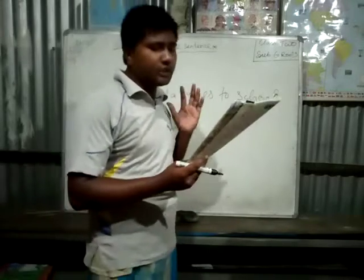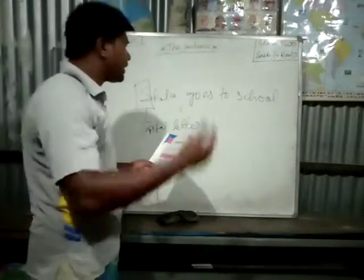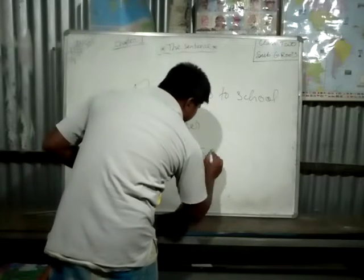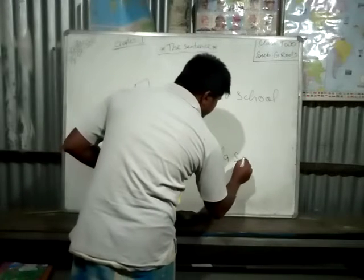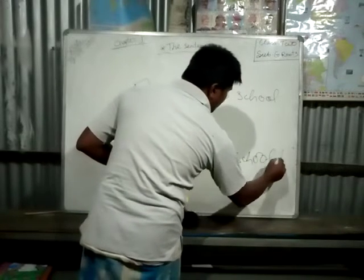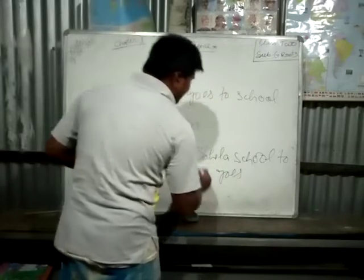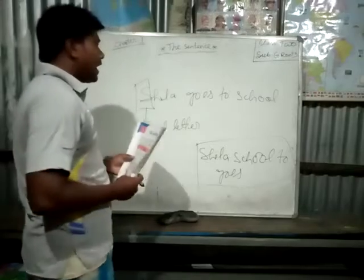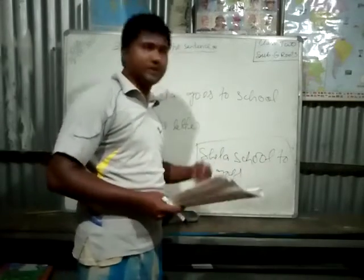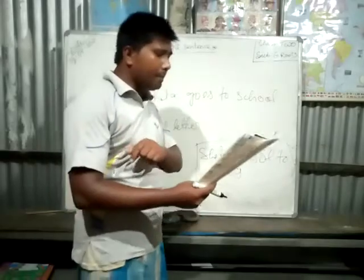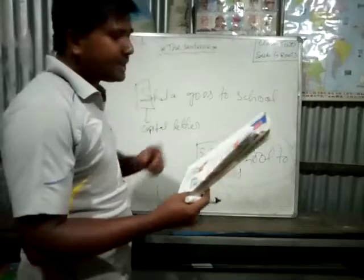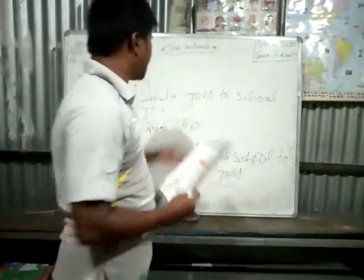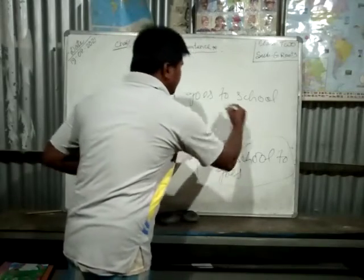Every word in a sentence must be in their proper order. Suppose I wrote 'Sheila goes to school,' but if I say 'Sheila is school to goes' — same words, but I have mixed them up. So that is not a sentence. The words in a sentence must be in their proper place. This is wrong; the correct order is right.